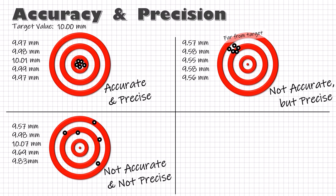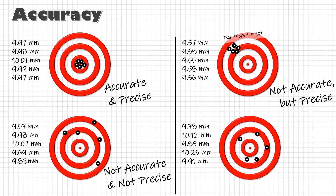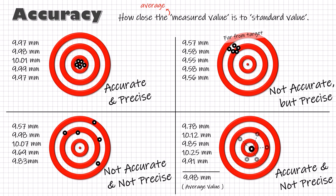But if the measured values are spread out, you may say it is not accurate and not precise. However, let me refine the definition: accuracy is how close the average measured value is to the standard value. If I take the average of that set of measured values and it is close to the standard value, the process can be marked as accurate — but it is certainly not precise.